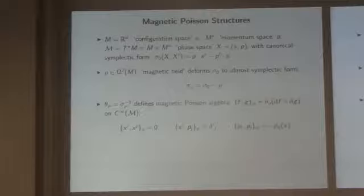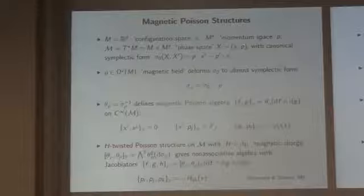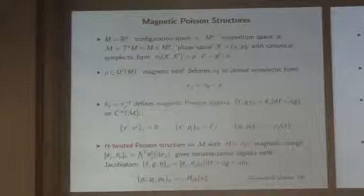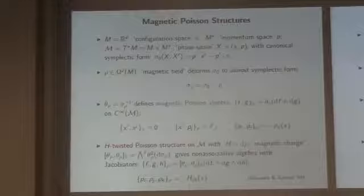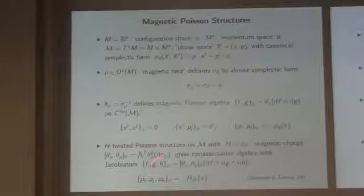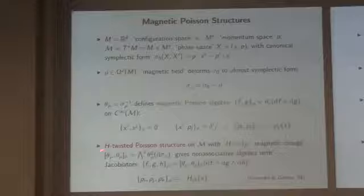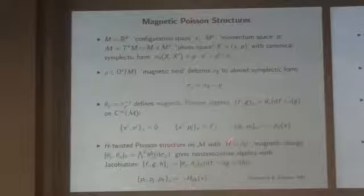This is an example of a twisted Poisson structure. It's twisted exactly by the exterior derivative of this two-form, which gives a three-form I'm going to call the magnetic charge. These brackets now generally define a non-associative algebra structure. You can calculate the Schouten bracket of this bi-vector with itself — it's non-vanishing in general, controlled by the curvature of this almost symplectic structure. The Jacobiators are only non-vanishing among the momentum coordinates and are given by the components of the curvature of this two-form.